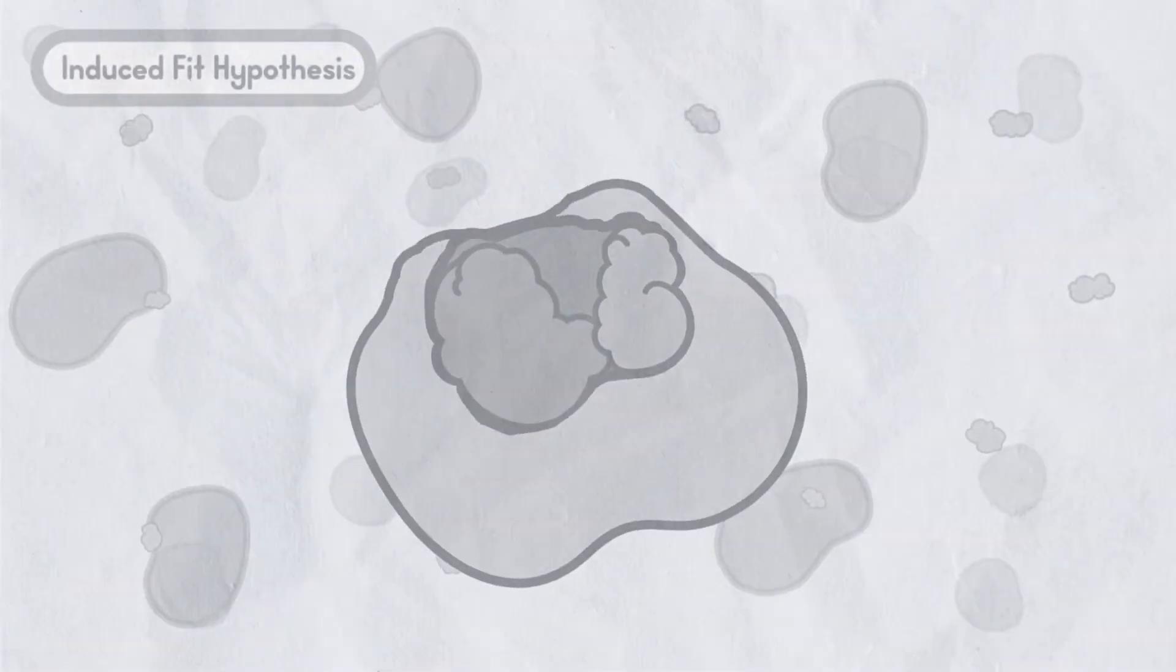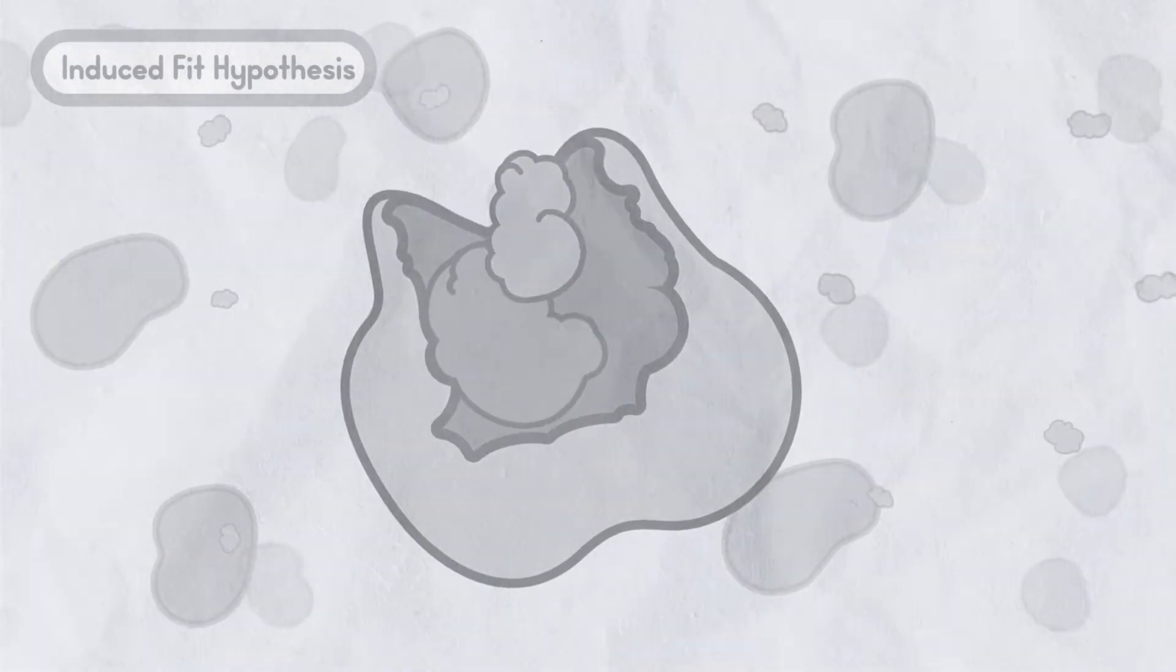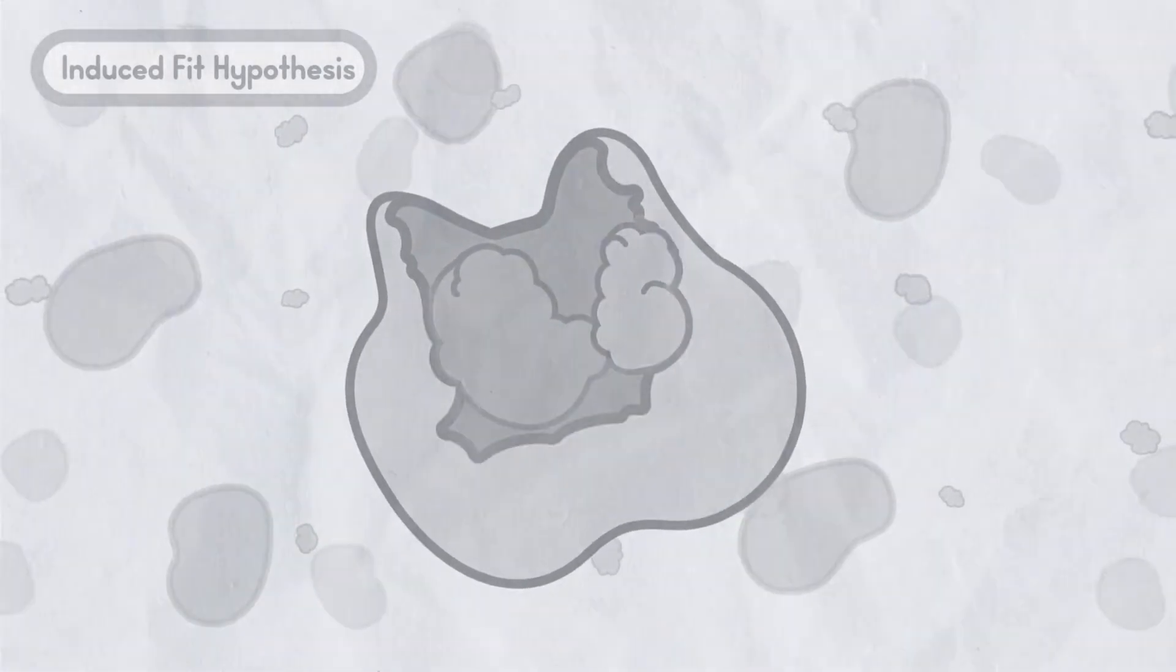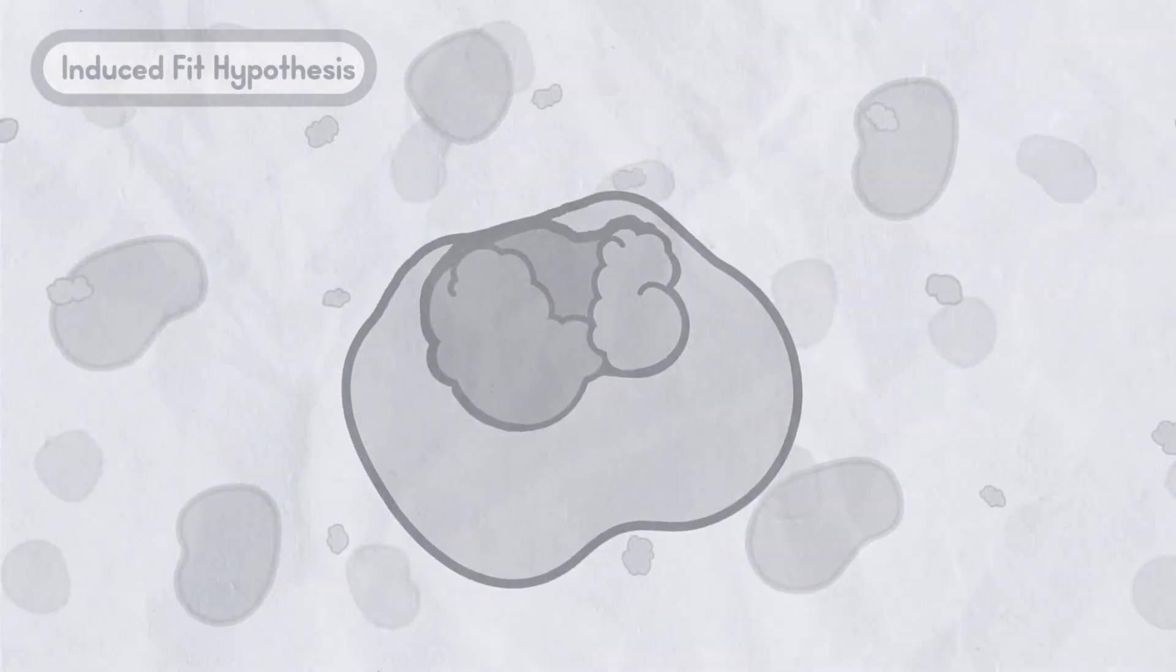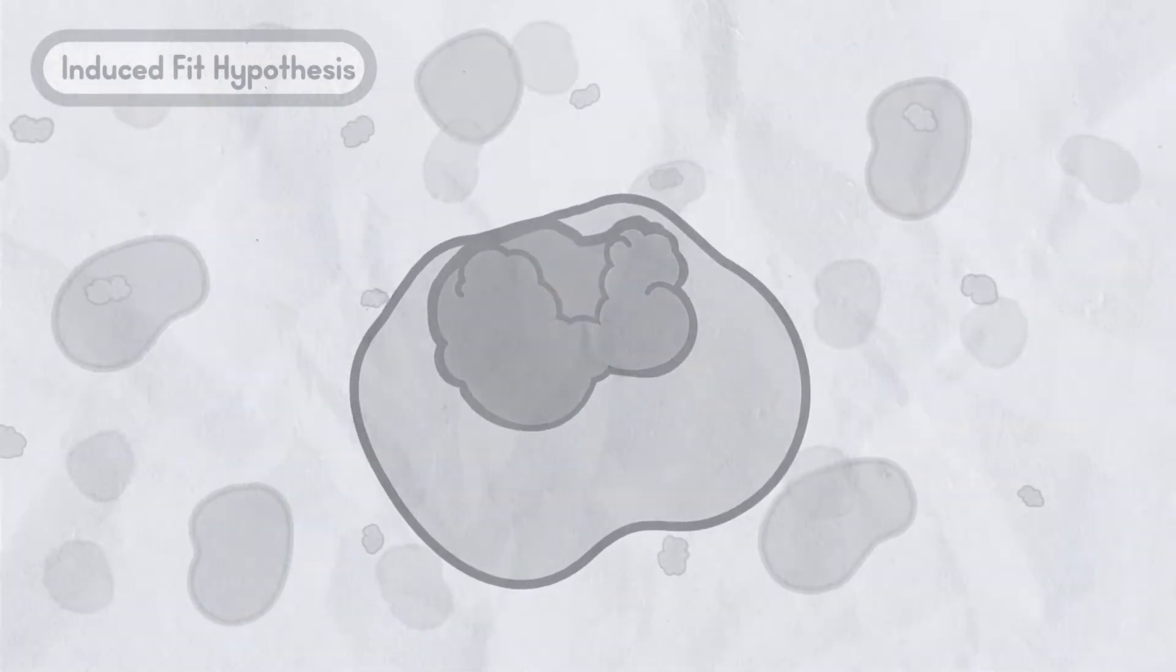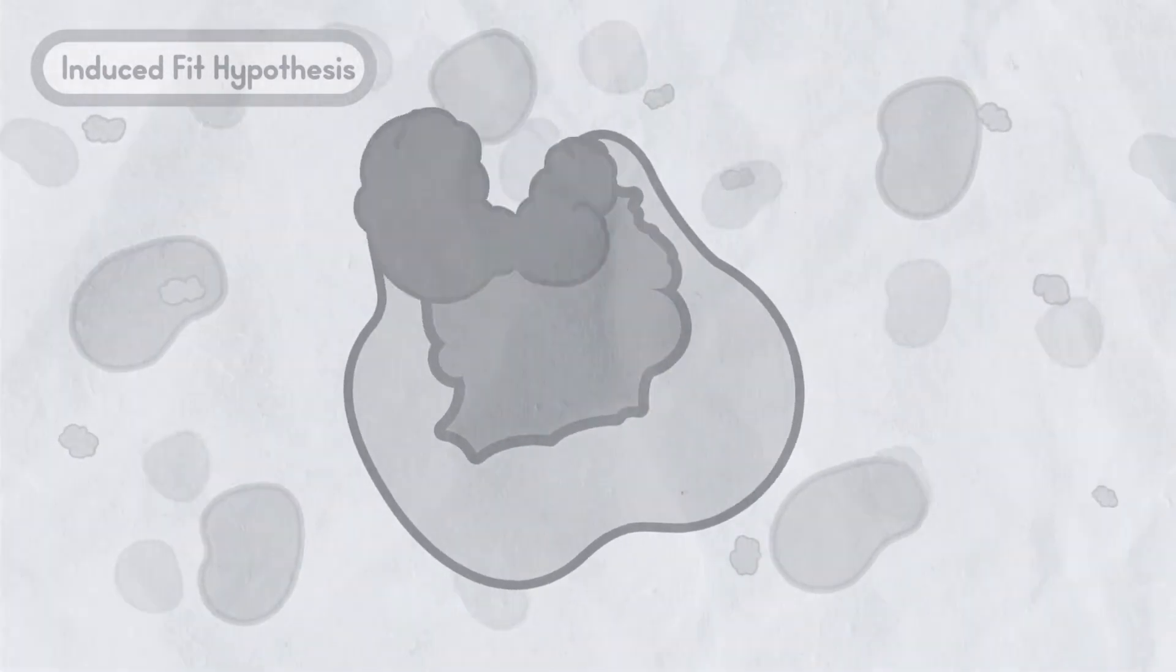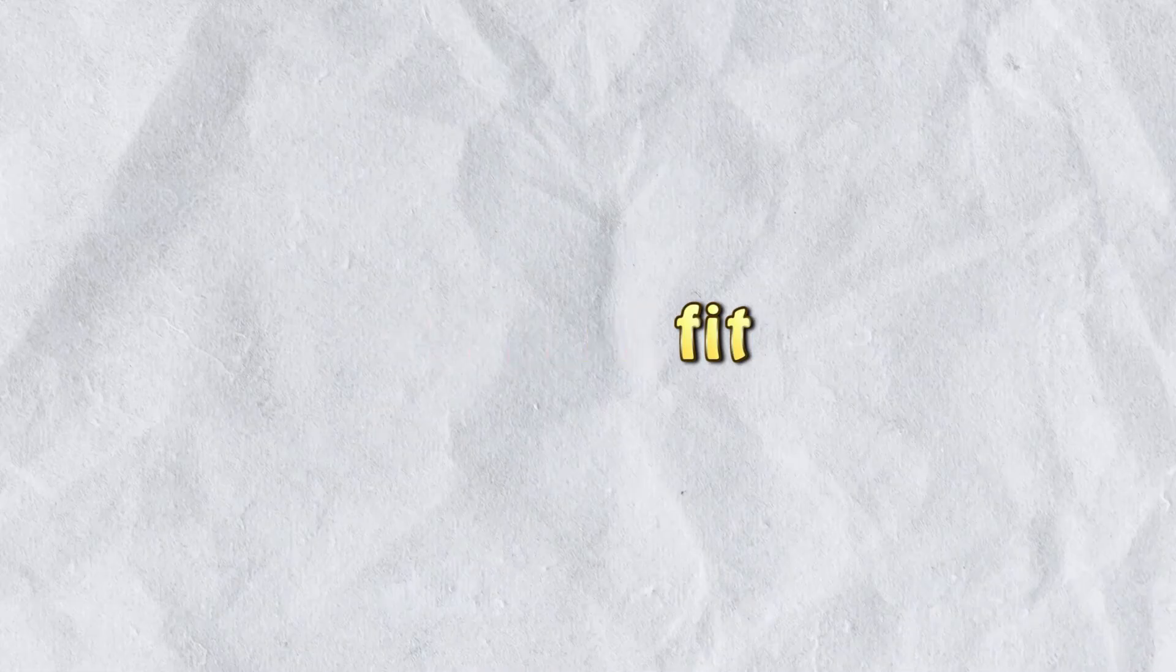The enzyme upon binding its substrate changes shape. The matching between an enzyme active site and the substrate isn't just like two puzzle pieces fitting together. Rather, the enzyme changes shape and binds to its substrate even more tightly. This fine tuning of the enzyme to fit the substrate is called induced fit.